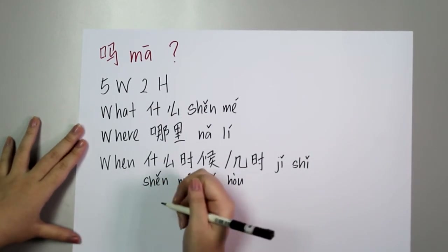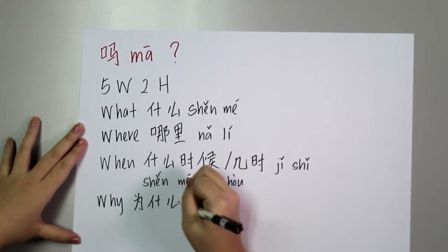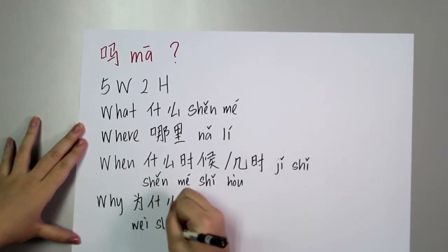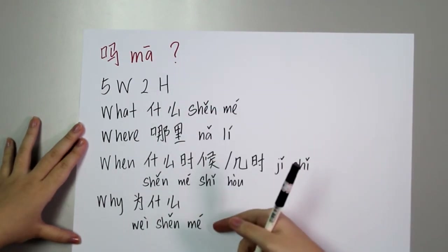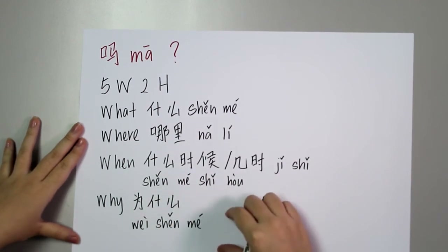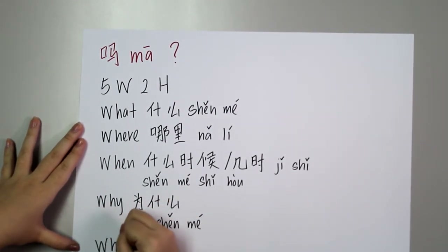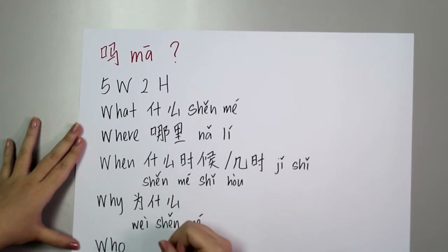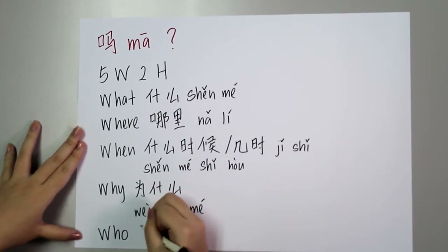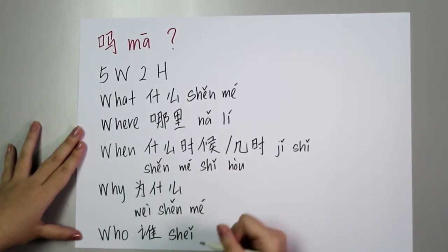The fourth W is 'why' — why is 为什么. As you can see, 什么 appears in both 什么 and 为什么 but with different meanings. For the fifth W, which is 'who' — who is 谁. Note that 谁 is pronounced differently from 神, so we have to pronounce it properly.